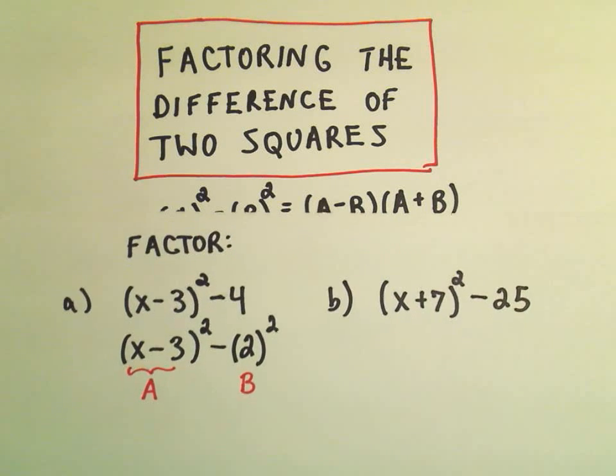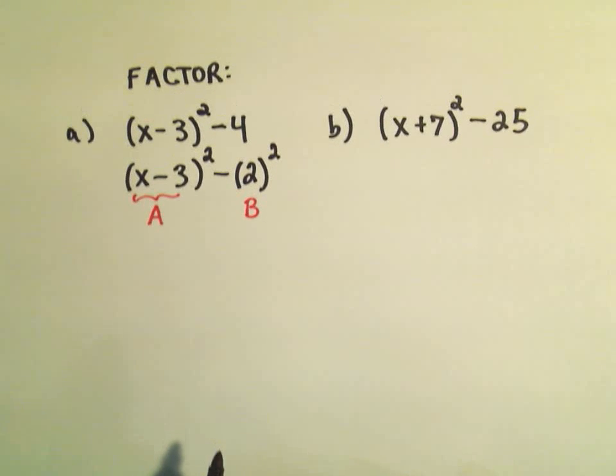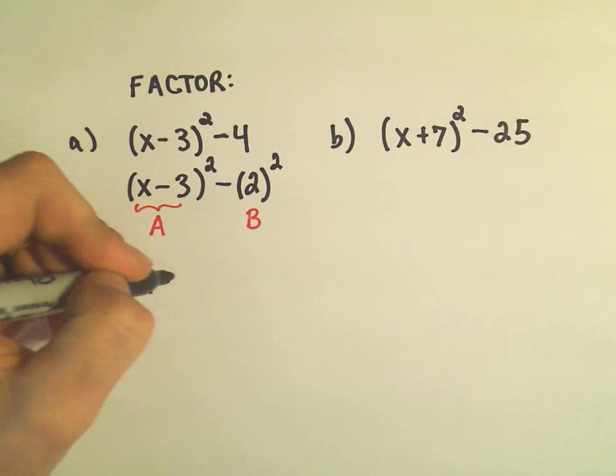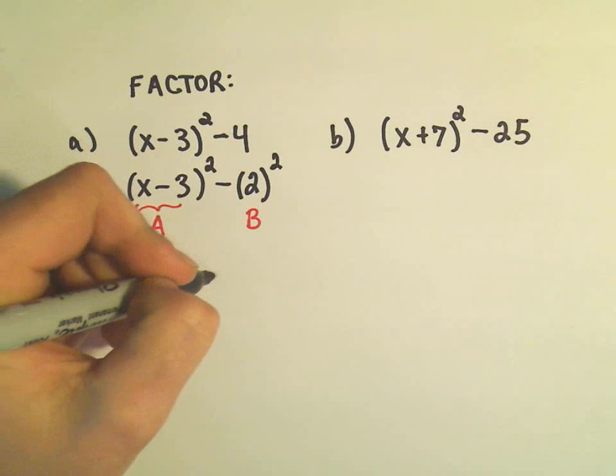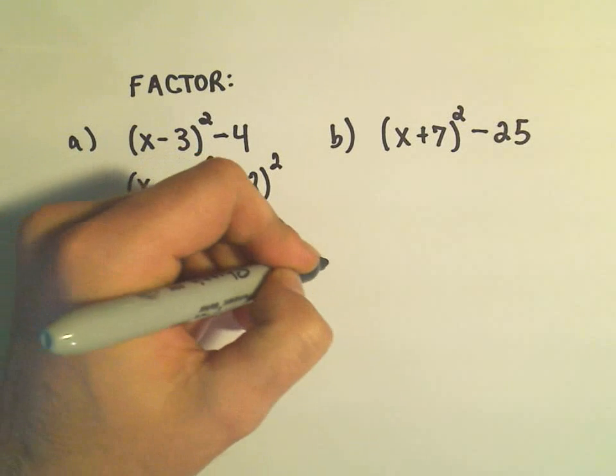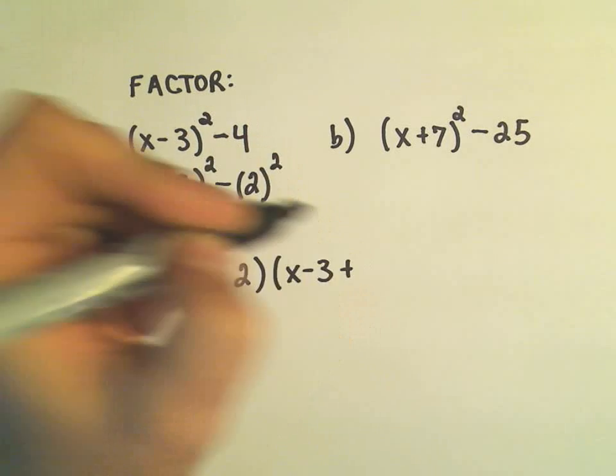So it says this is simply going to factor now as... there's our a minus our b, and then there's our a term plus our b.